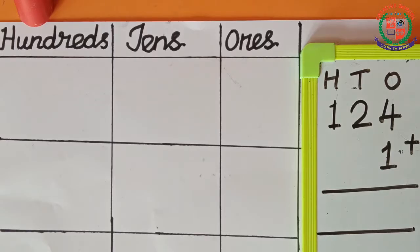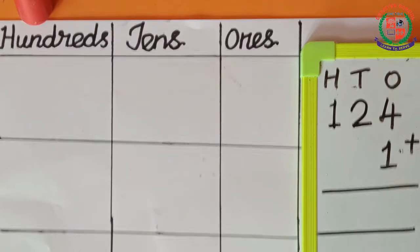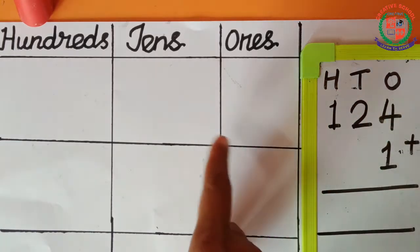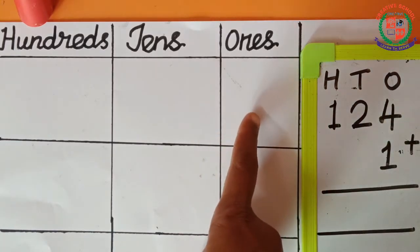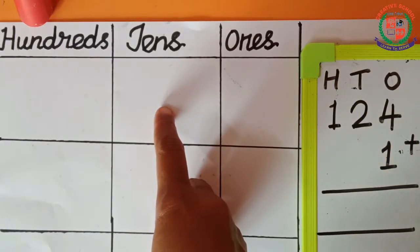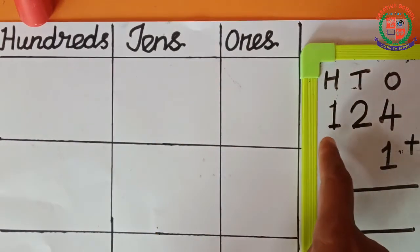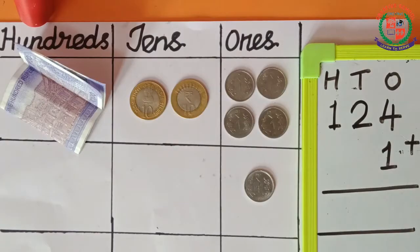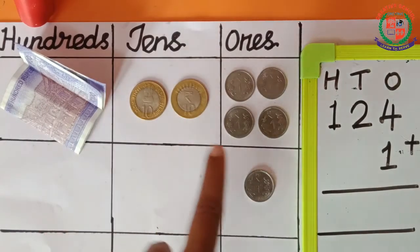First, let us do the sum: 124 plus 1. So, first we have to arrange the coins and currency. The first number is 124. How many ones are there? Yes, 4. We have to arrange 4 one-rupee coins. Then, in the 10th place, 2 — so 2 ten-rupee coins are here. Then in the 100th place, 1 number is there, so we arrange 100 here. So, we arrange 124.